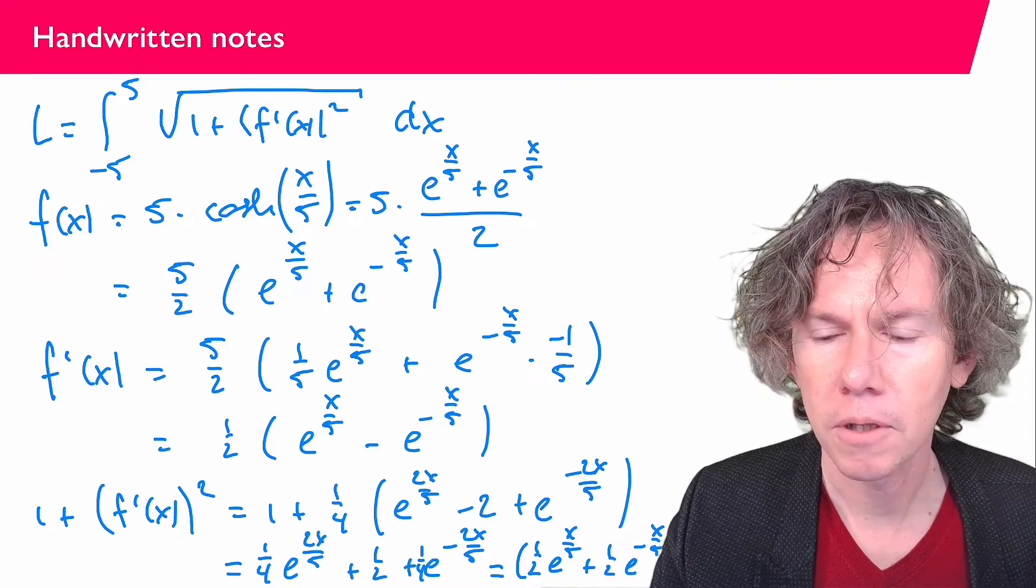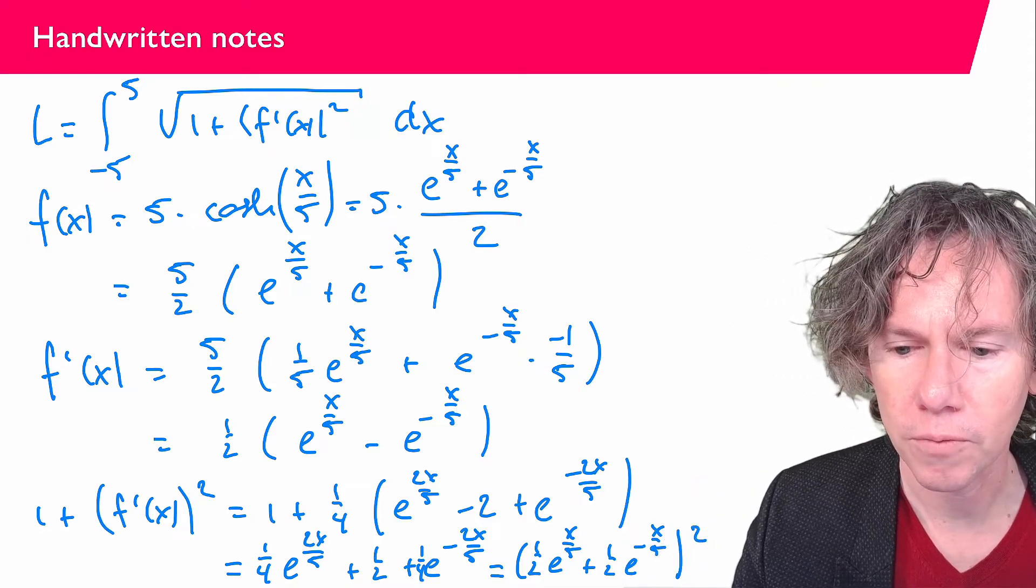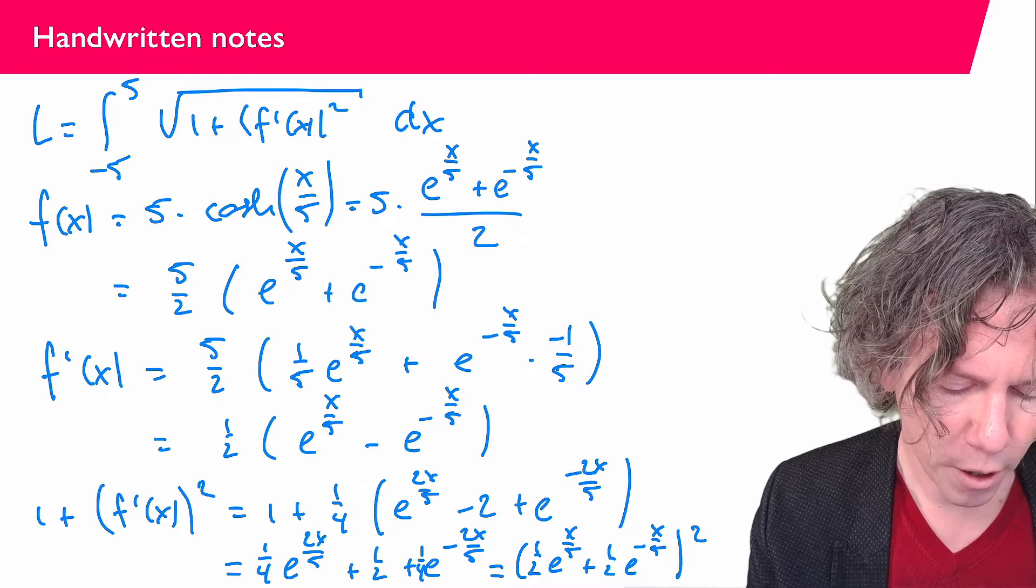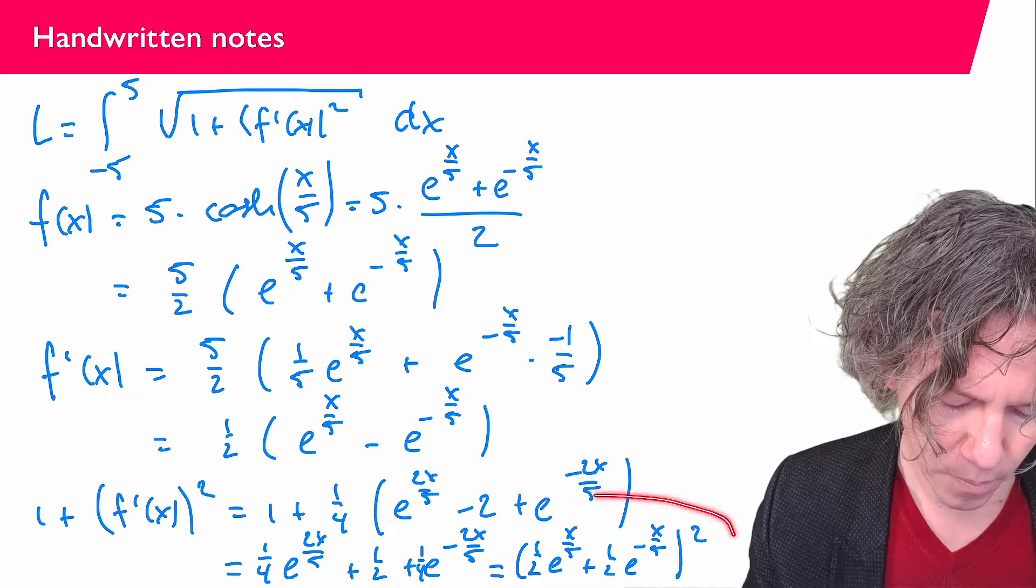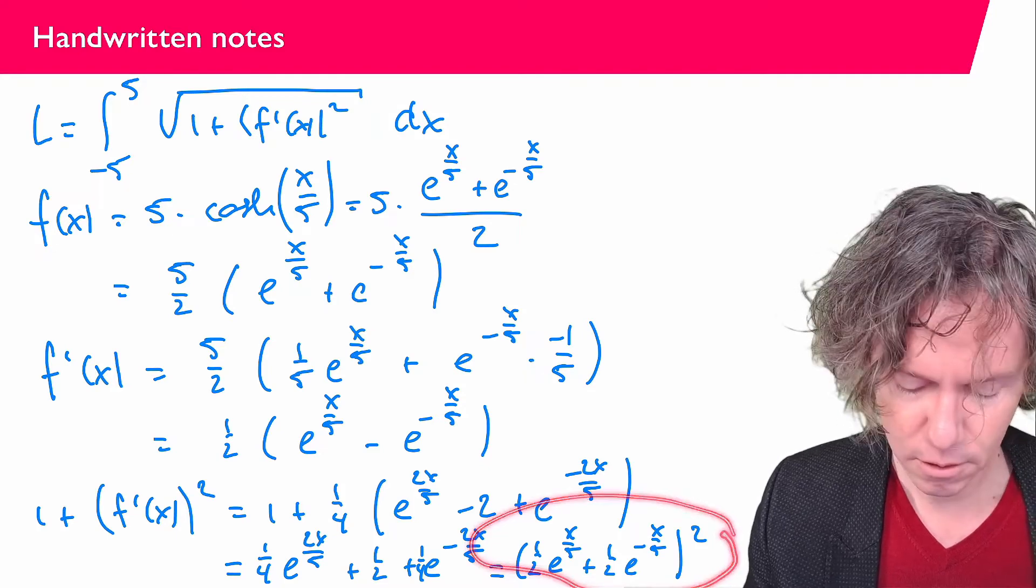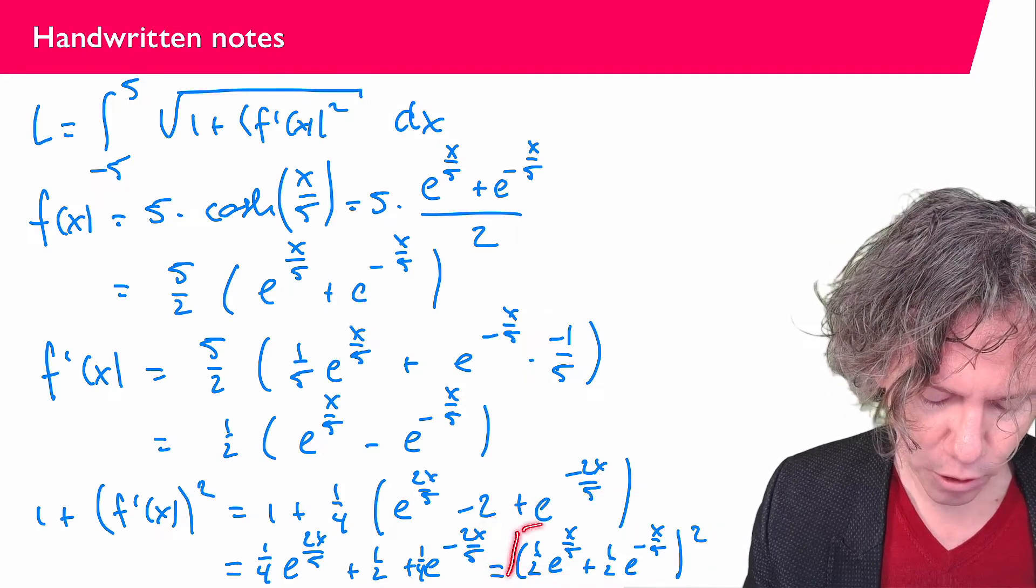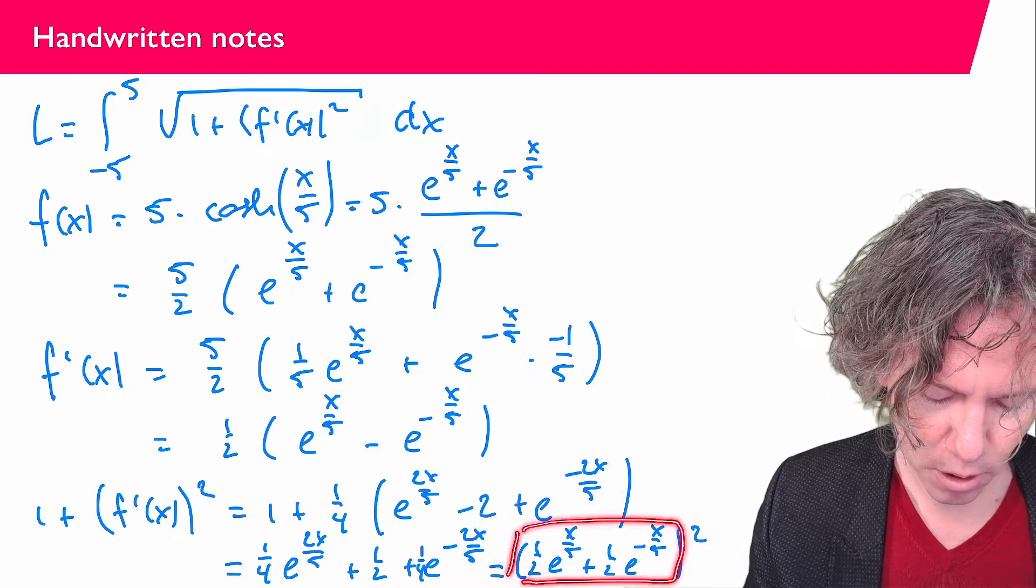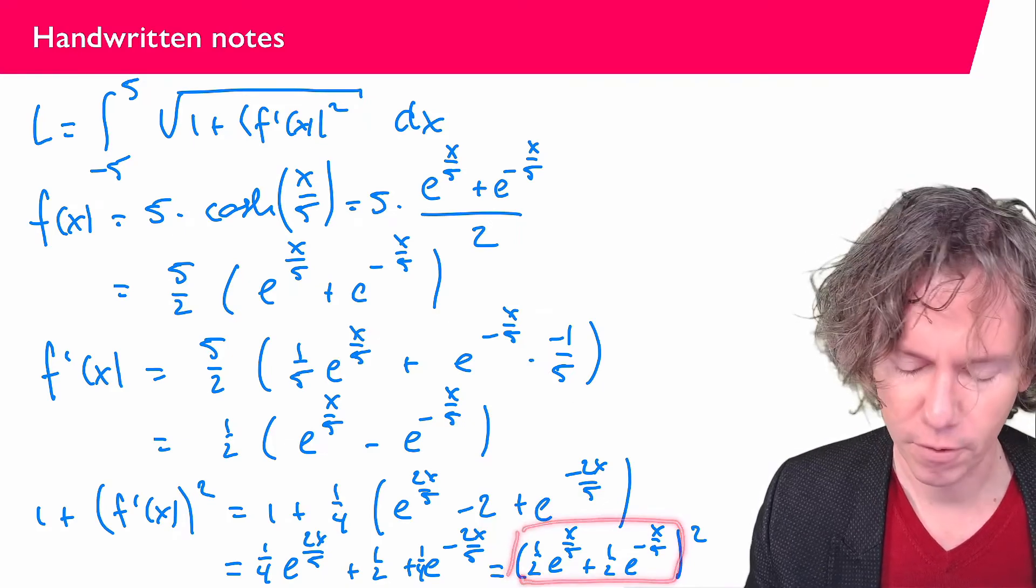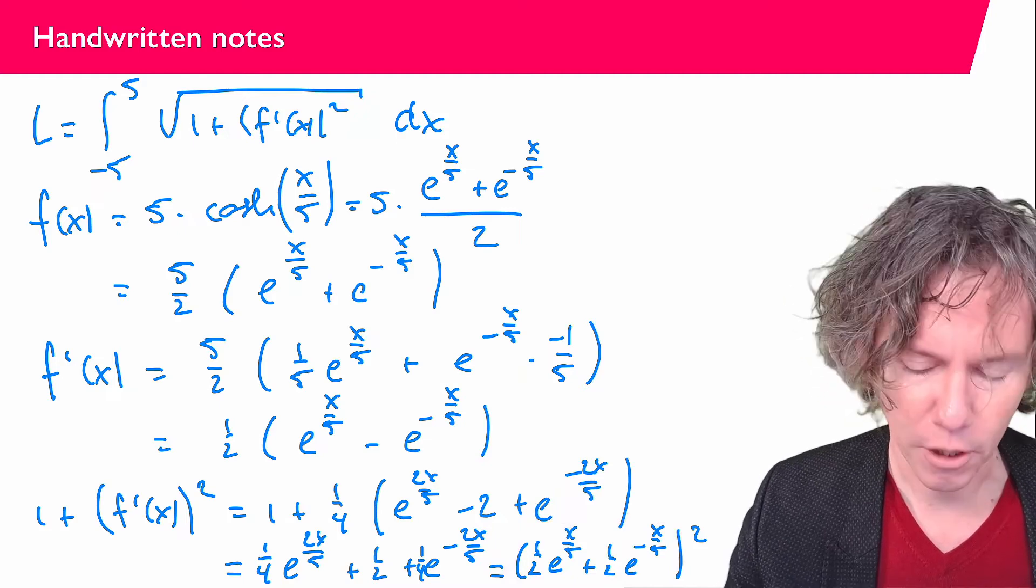So if I now take the square root, what we get is what is in between the brackets. So this expression is what we need to integrate from minus 5 up to 5. So let's do that on the next page.